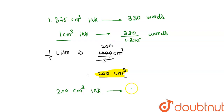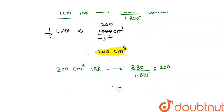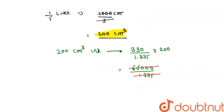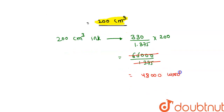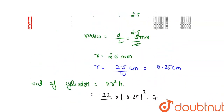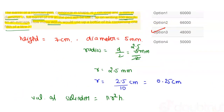Both sides are multiplied by 200, so the value is (330 / 1.375) × 200. That gives 330 × 200 = 66,000, divided by 1.375, which equals 48,000. So we can write 48,000 words using one-fifth of a litre. Option 3 is our correct answer. Thank you.